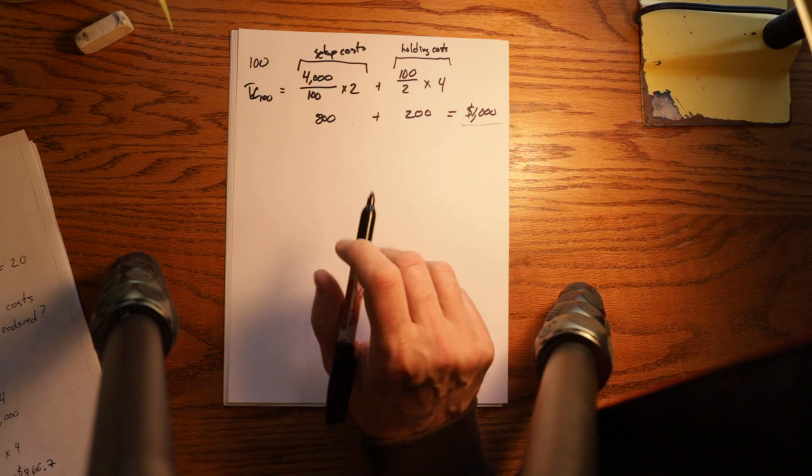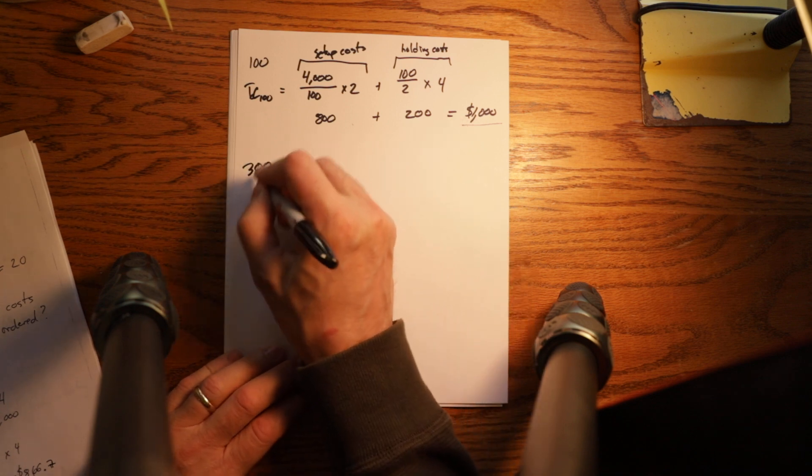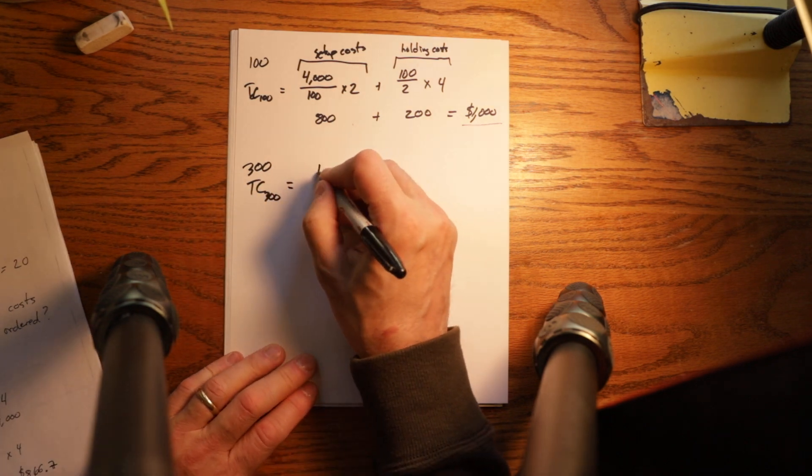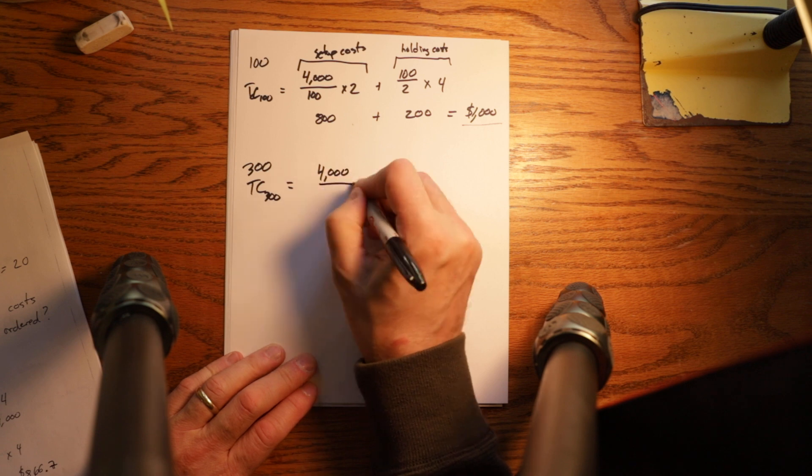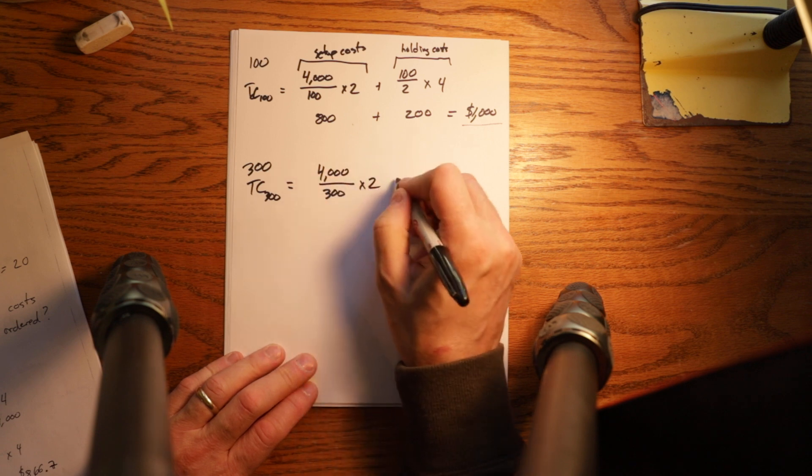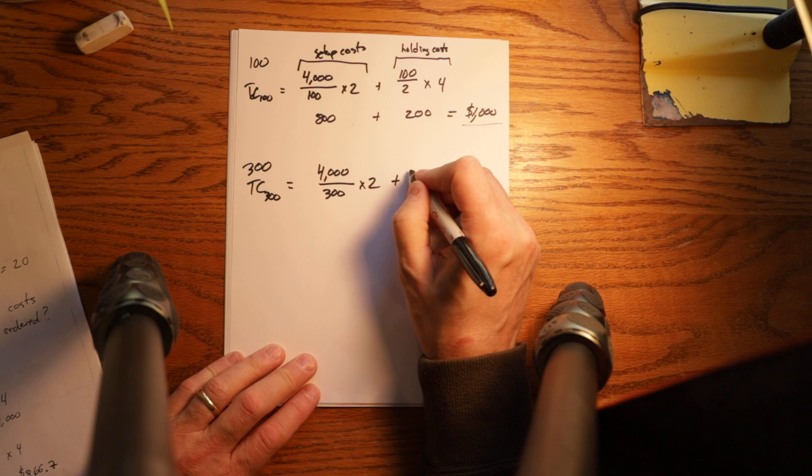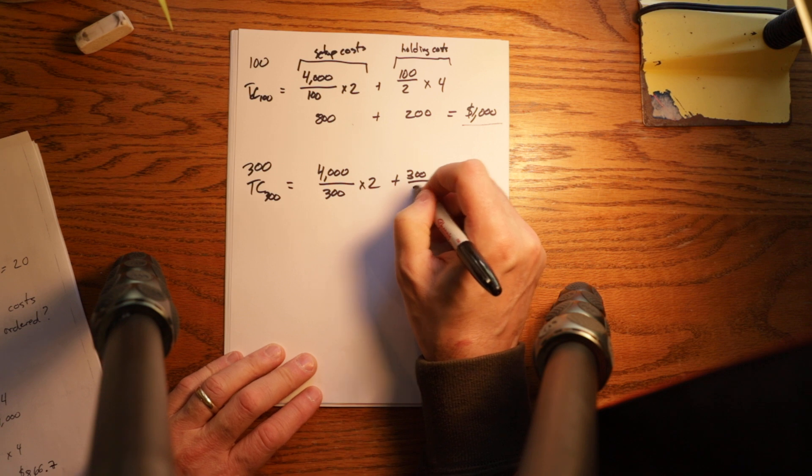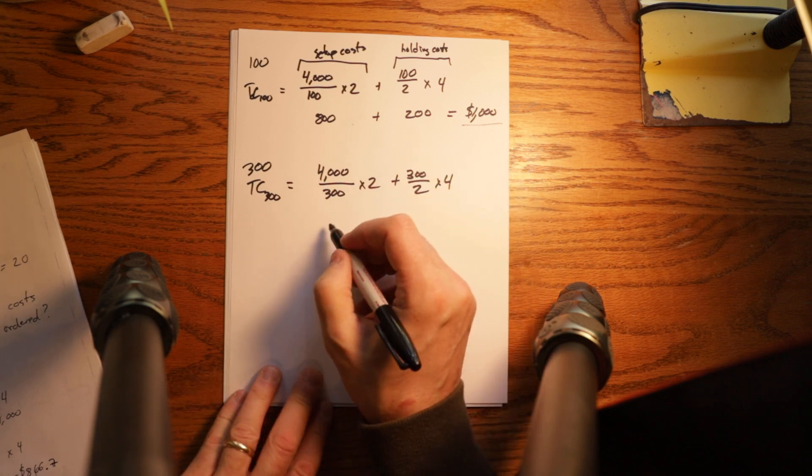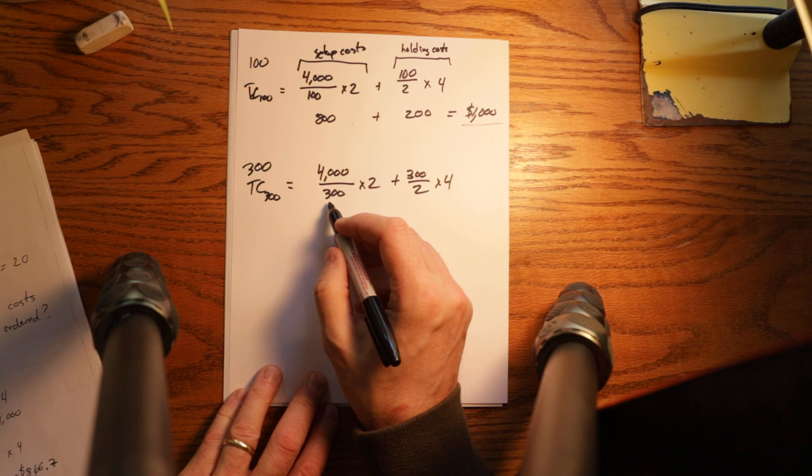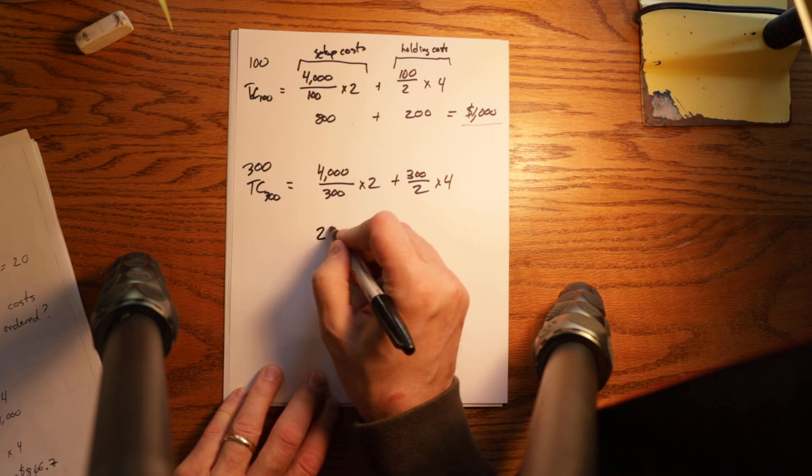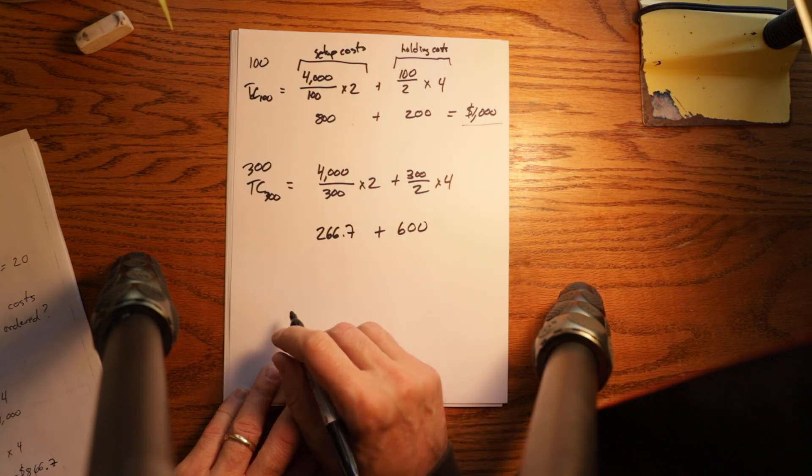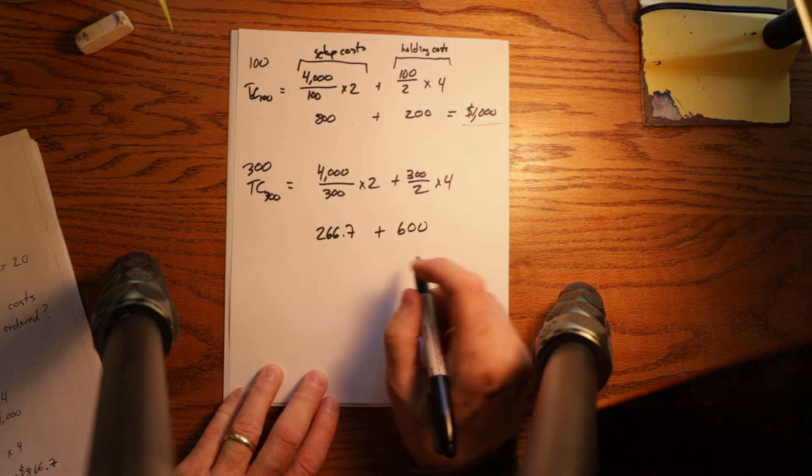Similarly, at 300, 4,000 divided by 300 times 20 plus 300 divided by 2 times 4. So now you'll see setup costs go down because we're ordering less frequently. But holding costs have gone up because we're ordering more at a time.